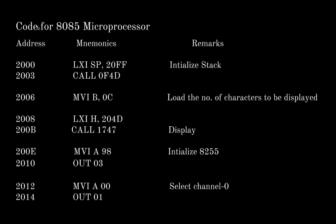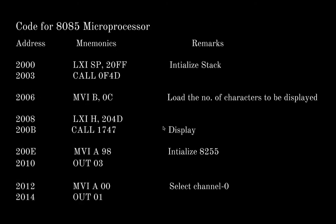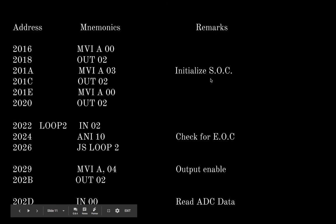The code for 8085 microprocessor interfacing with ADC. This is the basic code and I will be explaining the flow of it. First we initialize the stack to store our data. Here we are loading the number of characters to be displayed, as we are displaying final digital data along with the output digital voltage. This is the address of that digital data and here we call it display. Then we initialize our programmable peripheral interface. Then we select the channel 0 and we initialize the SOC.